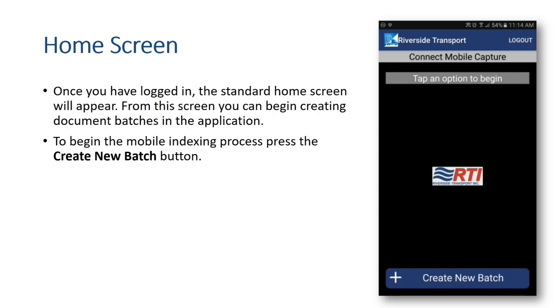Once you have logged in, the standard home screen will appear. From this screen you can begin creating document batches in the application. To begin the mobile indexing process, press the Create New Batch button.